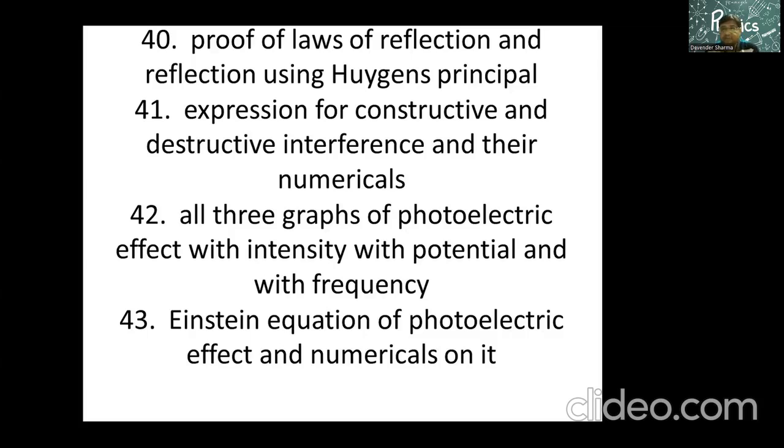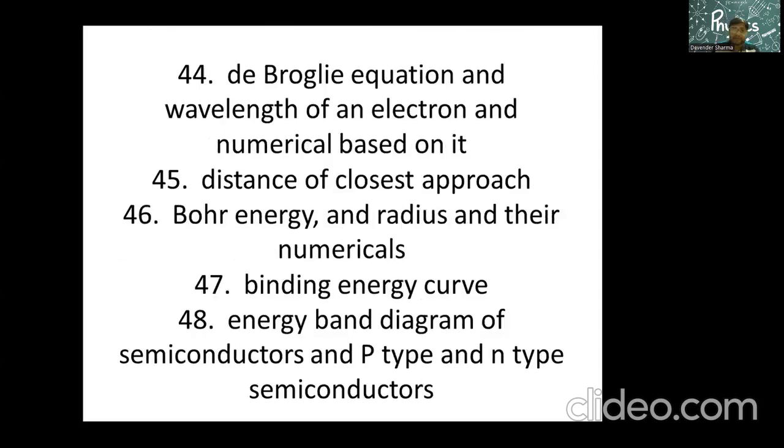Then unit number seven, dual nature. All three graphs of photoelectric effect with intensities, with potential, and with frequency also, and of course the threshold frequency concept. Failure of wave theory, that is a theoretical part, so this chapter is not that much of difficulty. Theoretical part of course you have to do Einstein equation and the numerical based on it, and of course how Einstein proved the laws of photoelectric effect. De Broglie equation, numericals based on it, especially the numericals will be like we have one photon and one electron, one electron and one alpha particle, they have same kinetic energy, what will be about their de Broglie equation at all.